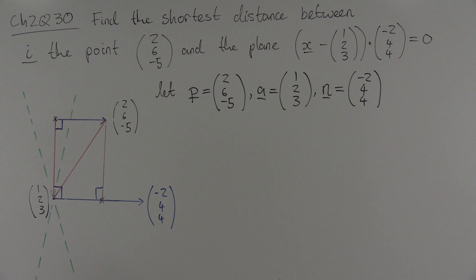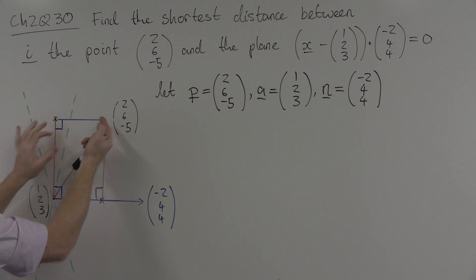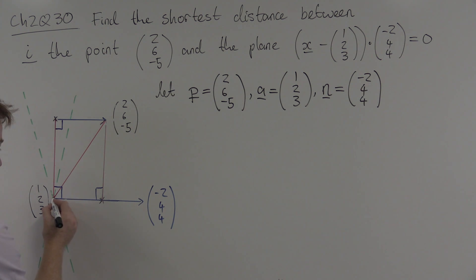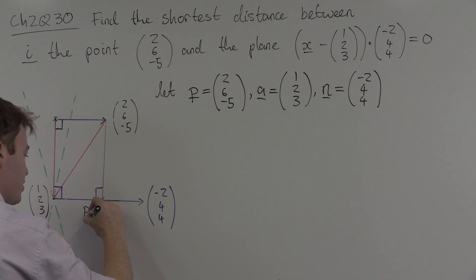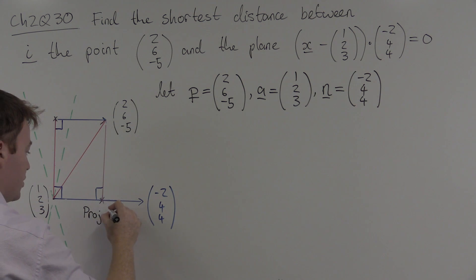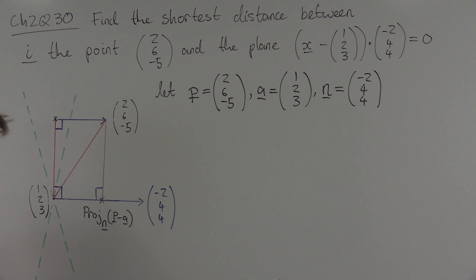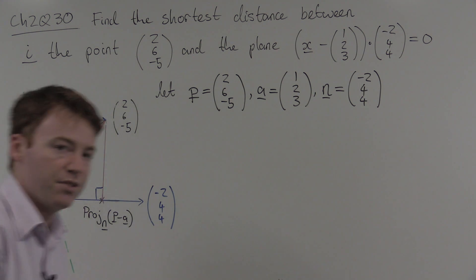The shortest distance between a point and the plane is the perpendicular distance. If we were to take the perpendicular vector n, shrink it, and move it so that its endpoints were a point on the plane and the other point (2, 6, -5), then that vector would be the vector with shortest distance between the plane and the point. We can find such a vector. It is given by the projection of the red vector, which is p minus a — from A go to P — onto the normal. This vector here is equal to this one here. All we need to do is find its length.